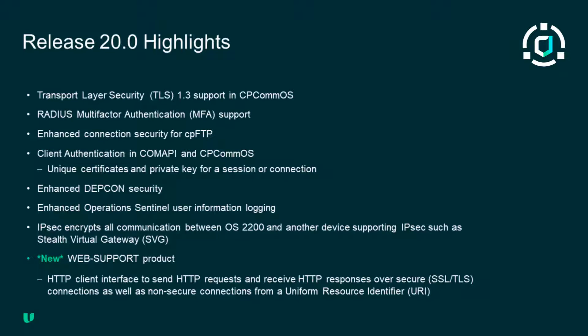COMPAPI and CPCOMOS security capabilities have been expanded to allow individual clients and applications to supply their own unique certificates and private key for a session or connection. COMPAPI and CPFTP now have security features with two new options. The first is enhanced PDF encryption with a 256-bit encryption level, allowing creation of digitally signed PDFs with PDF Advanced Electronic Signatures, also known as PADES. The second feature allows for encryption of outgoing email messages using Federal Information Processing Standards or FIPS 140-2 compatible encryption algorithm.